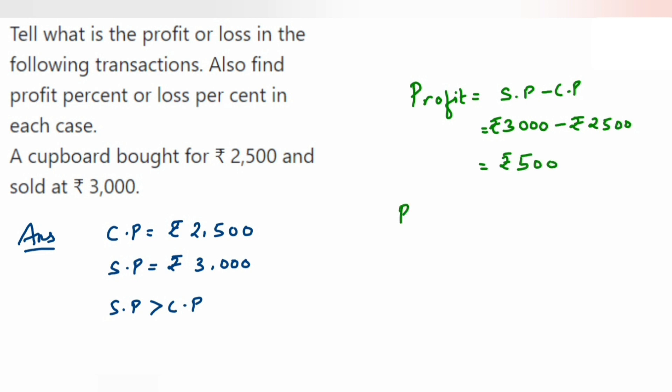Now we have to find out the profit percentage. So profit percentage is equal to profit upon CP multiplied by 100.